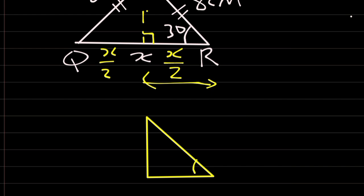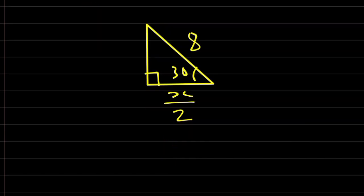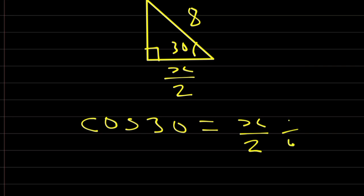Let's extract half of the triangle. Therefore, I have here to be 30 degrees. And here is 8. And I have here to be X over 2.